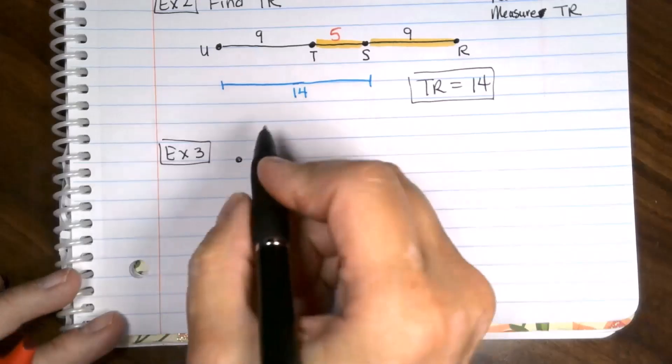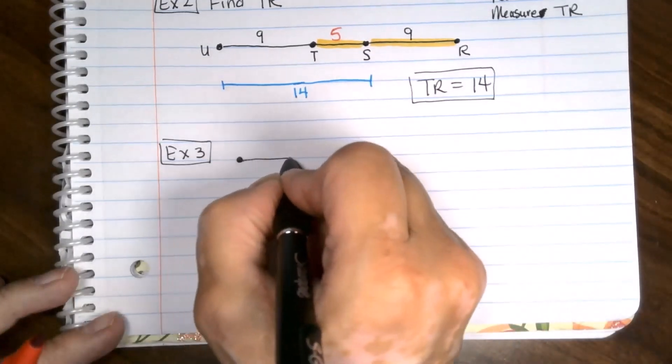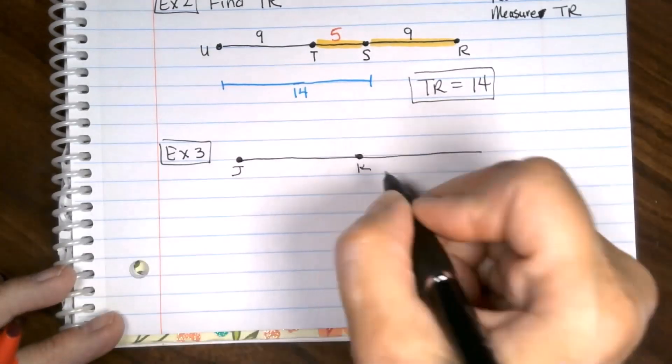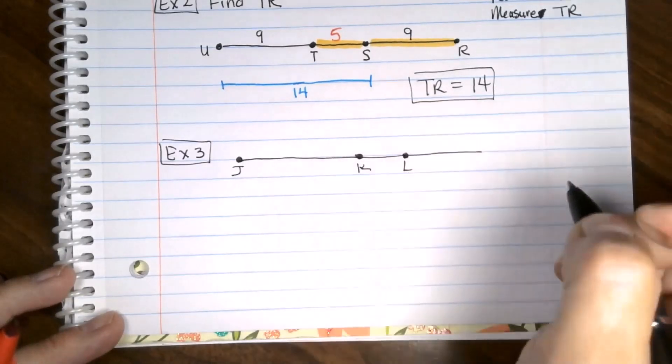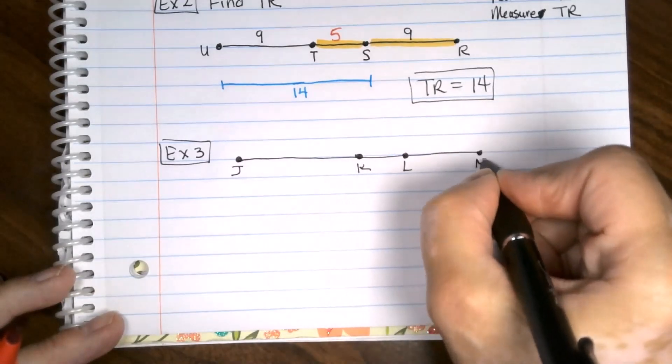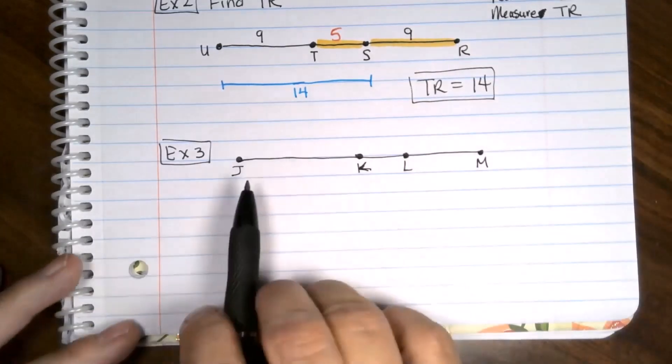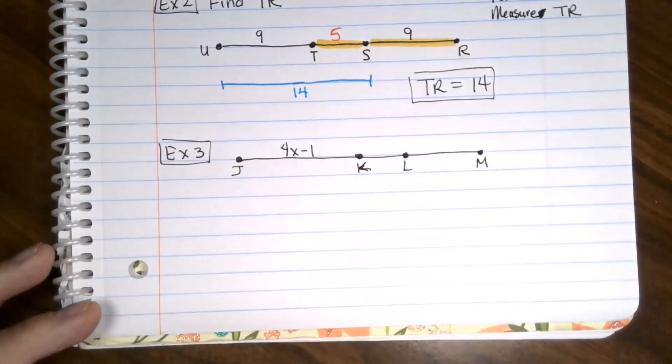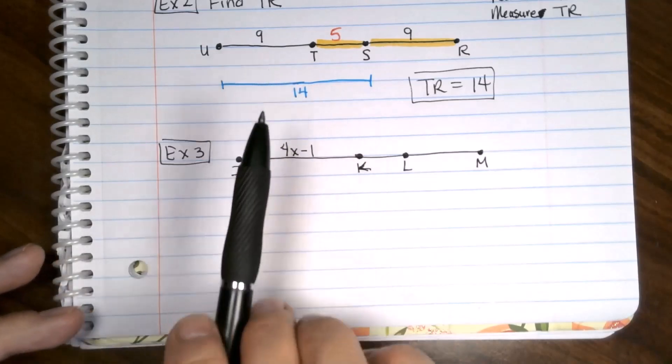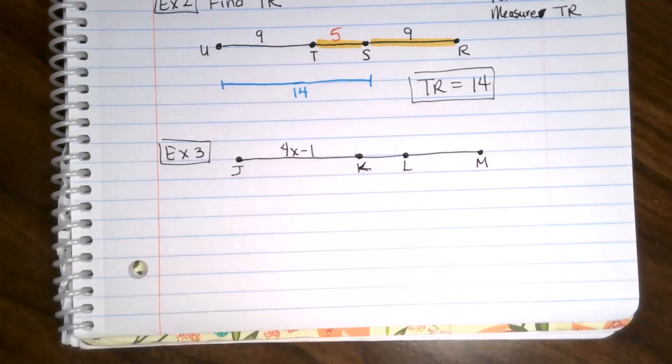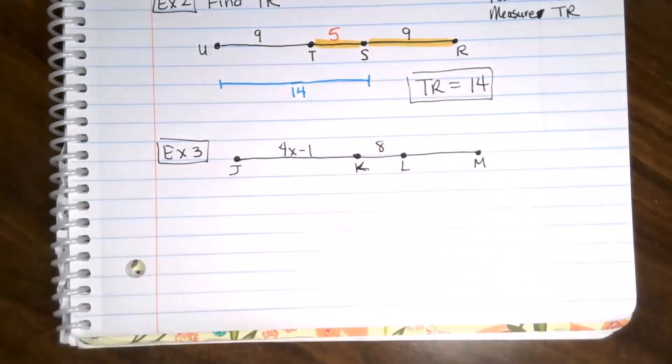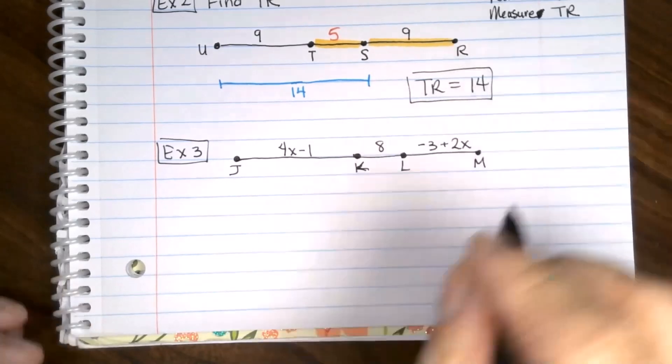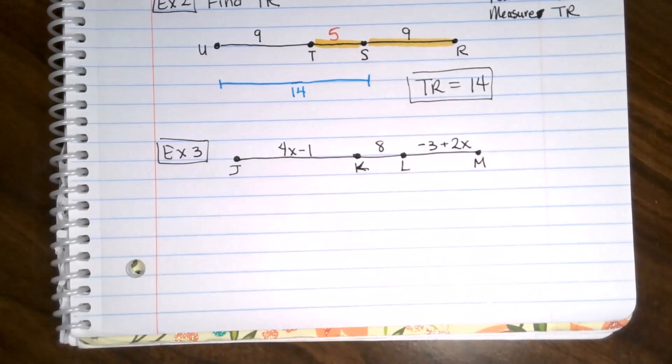Example three. There's a diagram we're going to start with. I'm going to make my line kind of long. I'll put some dots in here. This is J. This is K. Go a little bit and put an L. And an M. My K looks funny. All right. The piece between J and K. This is where you're going to see some algebra. This is 4X minus one. Now, don't get freaked out. We already know how to do this with numbers, right? So that we're just going to use the same processes. But we'll be using algebra expressions, too. K through L is eight. And then from L to M is negative three plus two X. I don't know why we didn't just write two X minus three. Same thing. But OK. This is how it is.